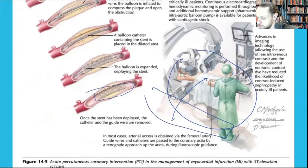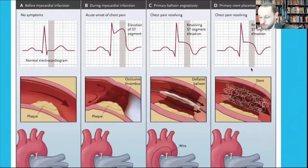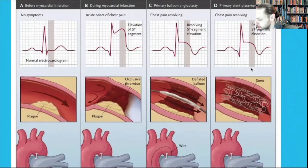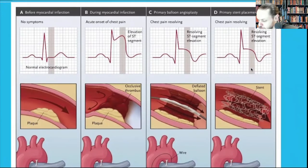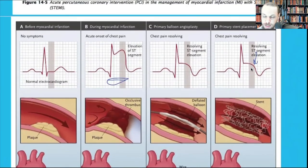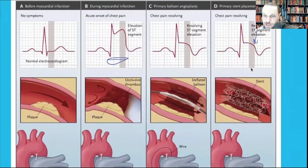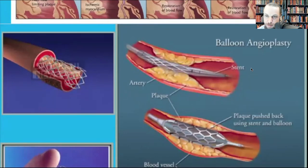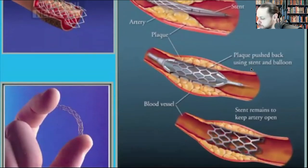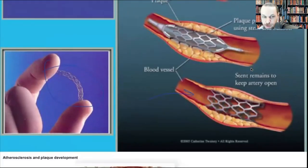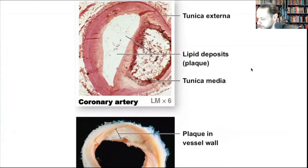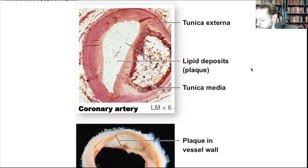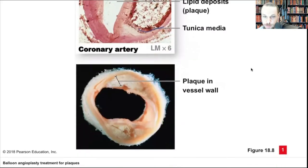If the stent is deployed in time, you can salvage the myocardium — ST segment changes will subside and may fully resolve to a normal EKG. The balloon is inflated, the stent is left in place. This diagram shows the lipid deposit, tunica media, and how plaque rupture closes the vessel.